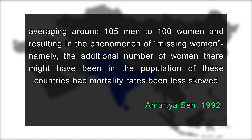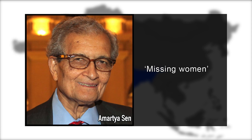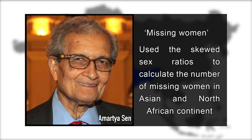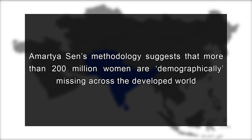This results in the phenomenon of missing women, namely the additional number of women there might have been in the population of these countries had mortality rates been less skewed. To bring attention to this fairly simple but powerful statistical phenomenon, the Nobel Prize-winning welfare economist Amartya Sen in 1990-1991 used the skewed sex ratios to calculate the number of missing women in the Asian and North African continent. His computations permit us to derive the number of additional women who would have been alive in, say, China or India, if these countries had the same ratio of women to men as in developed countries, where men and women presumably receive similar care.